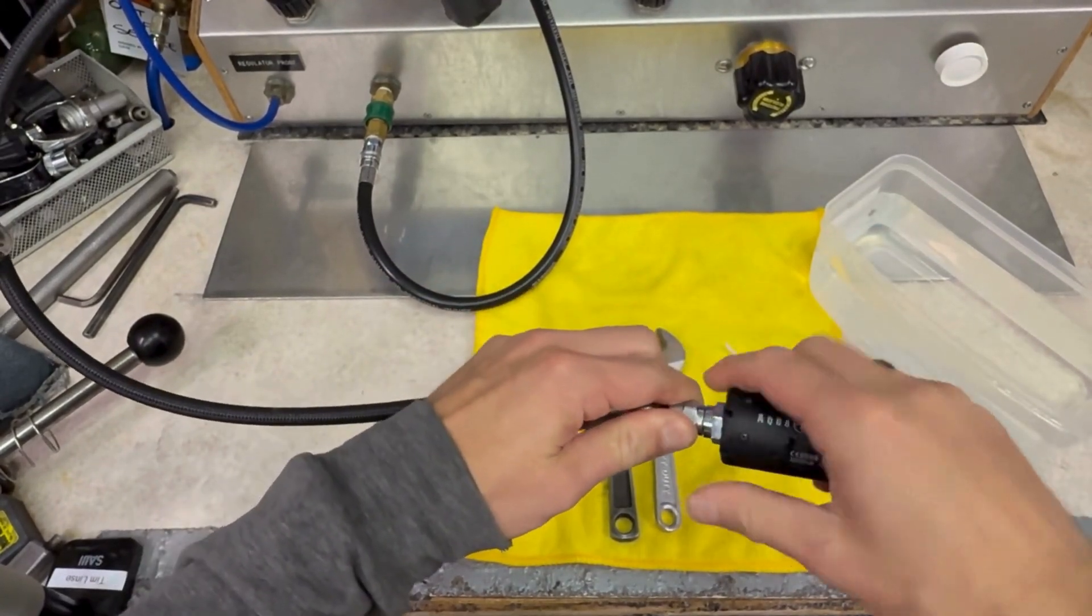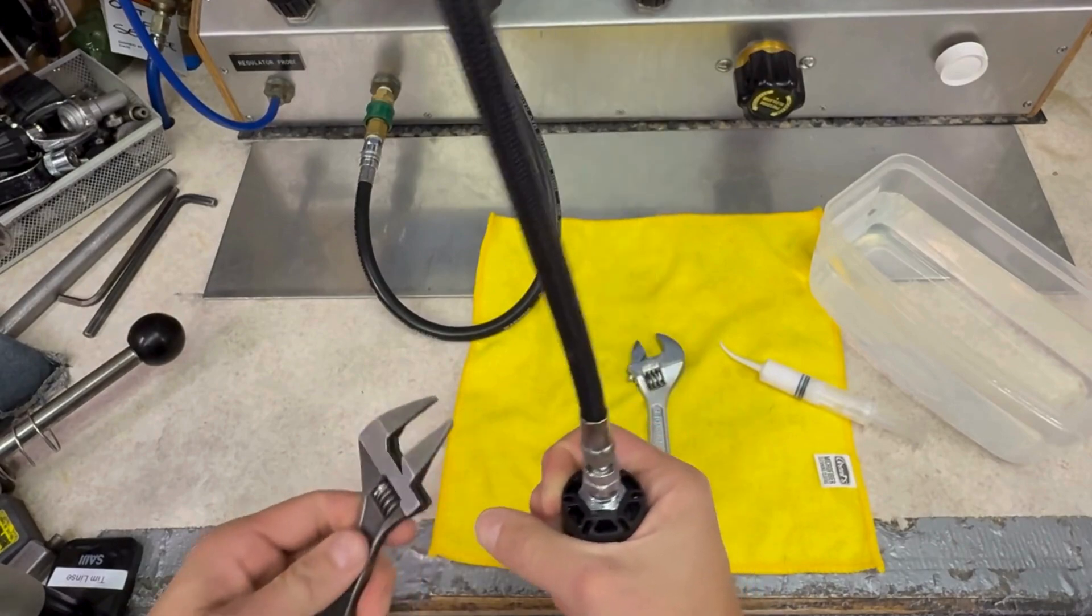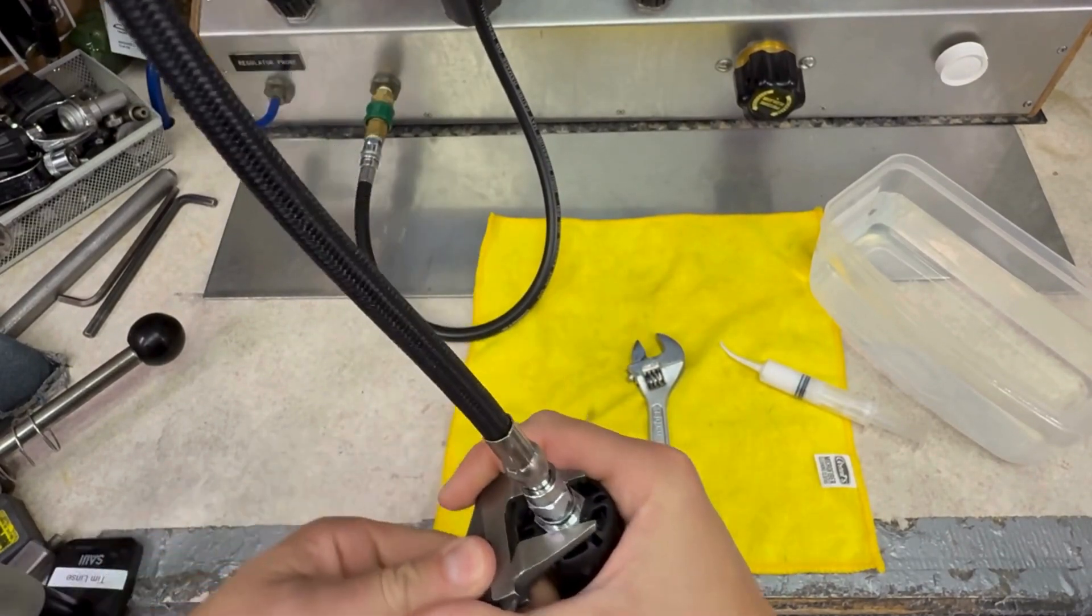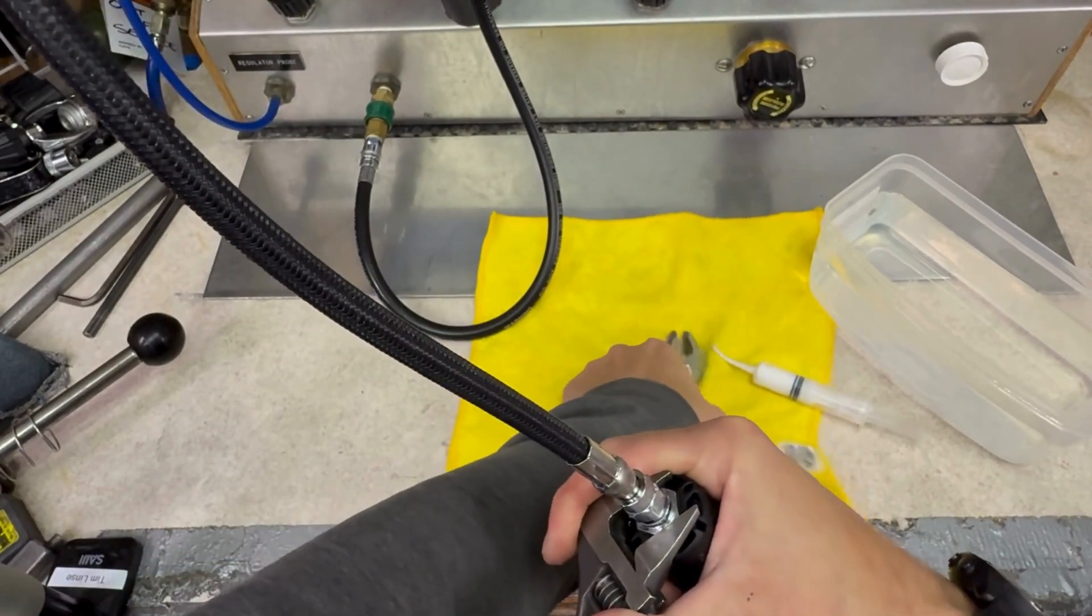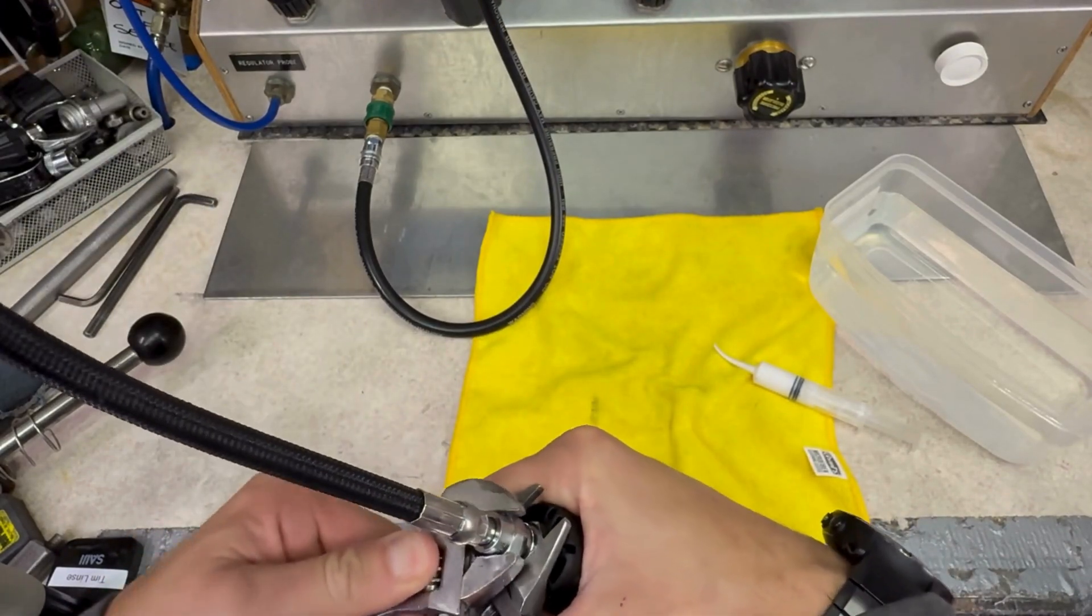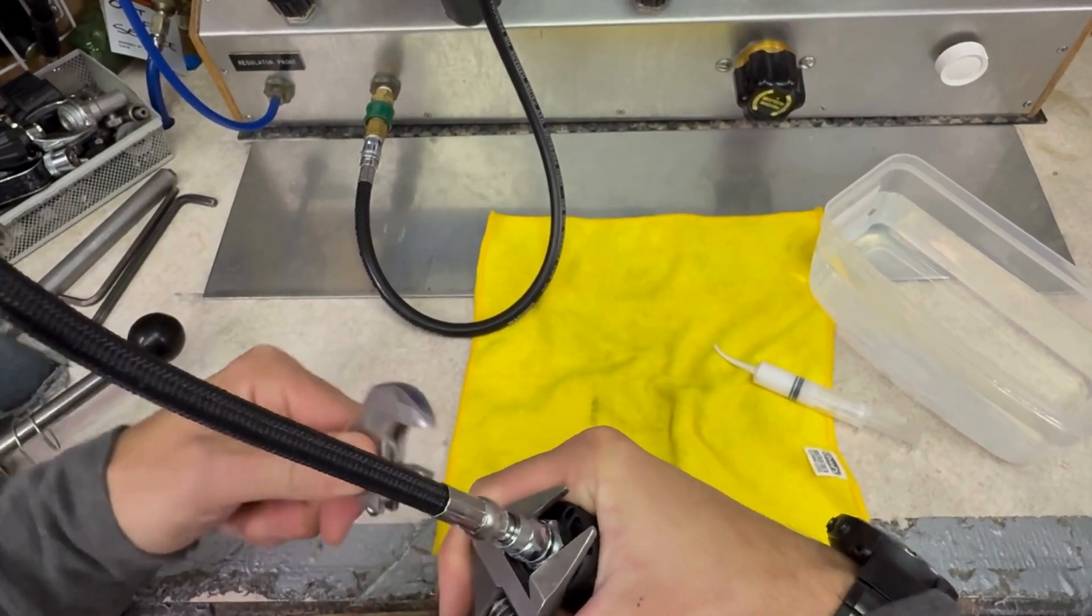So anytime we're working with hoses and fittings on any scuba equipment, not a bad idea to use two wrenches, but also don't feel like you've got to go crazy tight here. Just a little bit past hand tight is all you need.